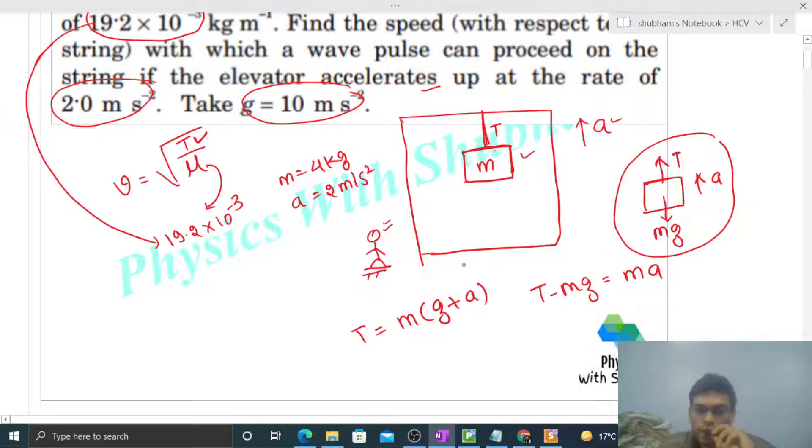By the way, this tension value you can directly get from g_effective also. The g_effective inside an elevator is g + a if the elevator is accelerating upward with acceleration a. That's why the effective weight of this block will be m(g + a), so tension will be m(g + a).